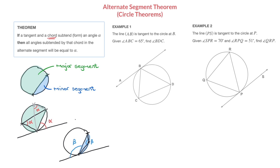Let's work through example one. We're told the line AB is tangent to the circle at B. Given angle ABC is equal to 65 degrees, we need to find the angle BDC. I'll add the numerical information to the diagram — angle ABC is 65 degrees. The angle BDC is what we need to find, and I'll mark that in red.